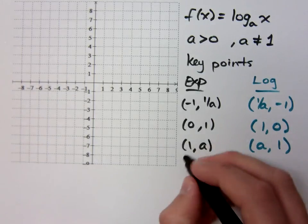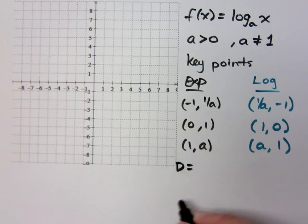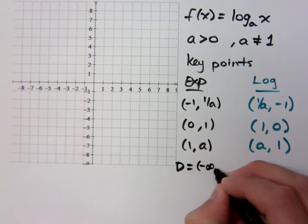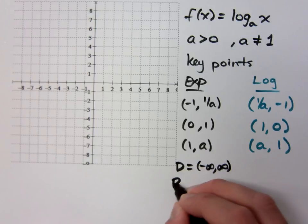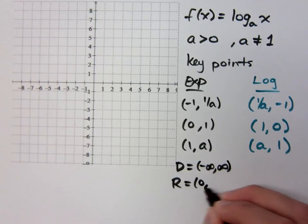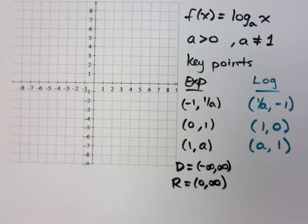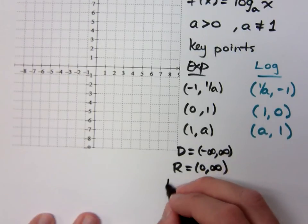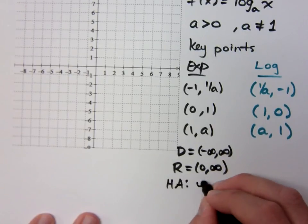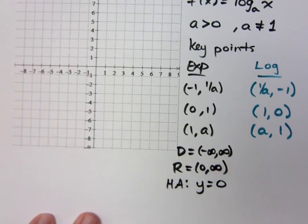What was the domain for your exponential? All real numbers. And what was the range? 0 to infinity. And you had a horizontal asymptote at y equals 0, right?